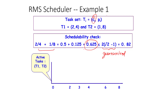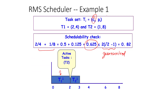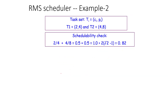We can create an actual schedule: first we schedule the first instance of T1, then an instance of T2, and after time 4, another instance of T1, and so on. You can see that it is schedulable.